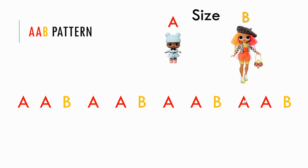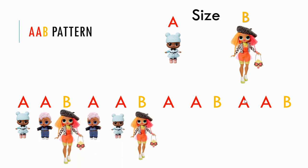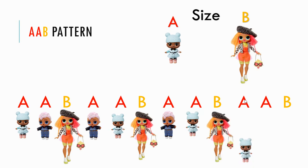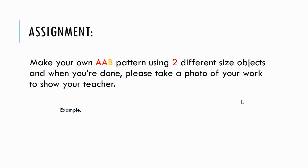Little, little, big — little, little, big — little, little, big — little, little, big. There goes our AAB pattern with little, little, big, and then it repeats itself.